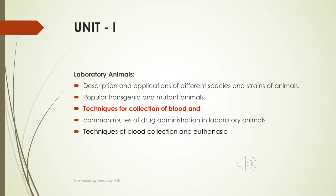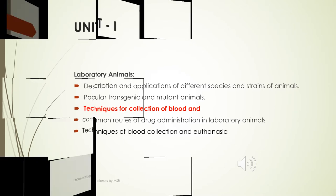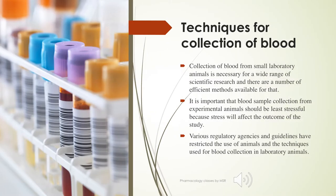The next topic in Unit 1 is techniques of blood collection. Collection of blood samples plays a key role in our scientific research. When we are collecting the blood sample, the animal should not undergo any stress, as stress will show an effect on the results of our scientific study — the results may be altered.